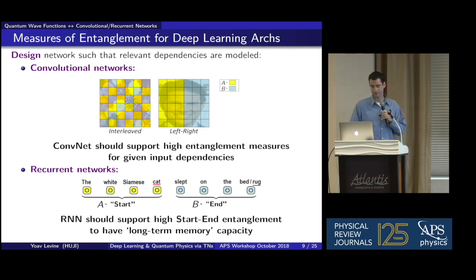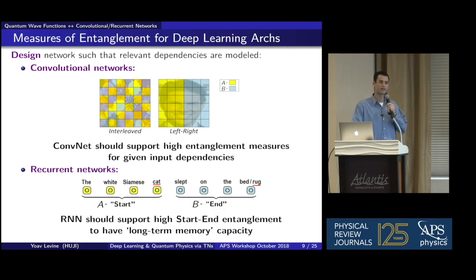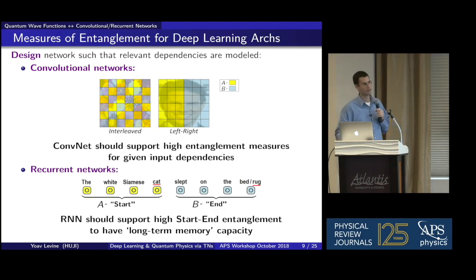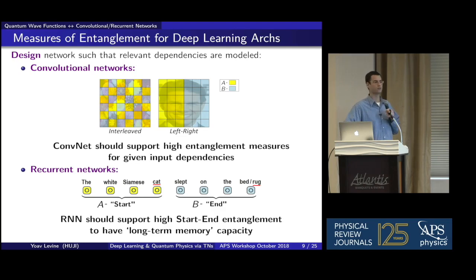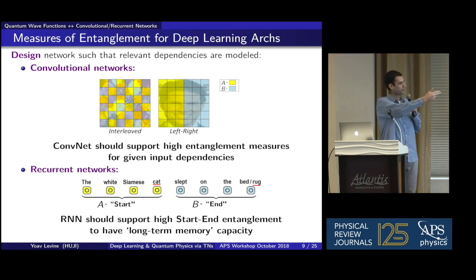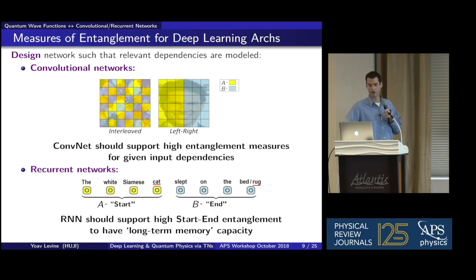For recurrent networks, the partition of interest is different. The start-end partition, where the first and last halves of the sequence are in A and B respectively, is a surrogate for the long-term memory capacity of recurrent neural networks — an obviously desirable trait. In the example 'the white Siamese cat slept on...', if the network can't integrate a convoluted function of A and B together, it will probably predict 'bed' because it sees only the last few words. We'd like our RNN to have long-term memory to translate and predict well.